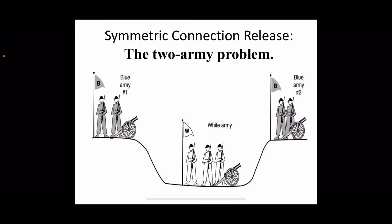The white army is stronger than either blue army group alone, but together the two blue armies are larger and stronger than the white army. So if either blue army attacks by itself, it will be defeated. But if both blue armies attack the white army simultaneously, the blue army will be victorious.